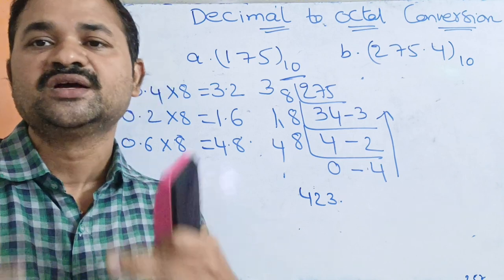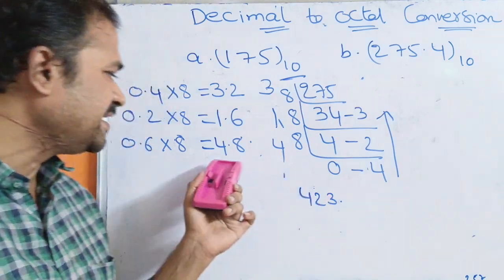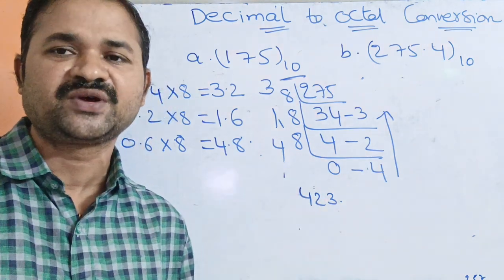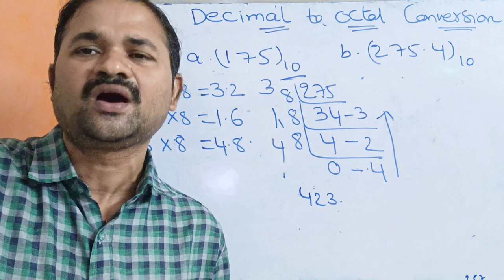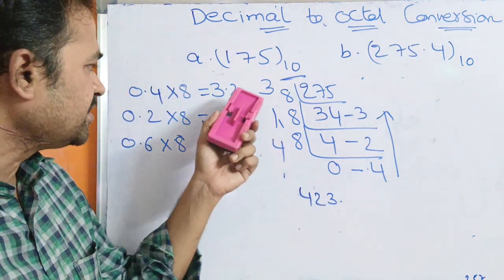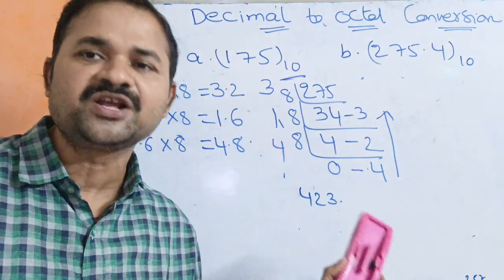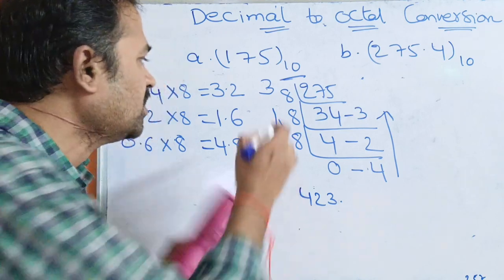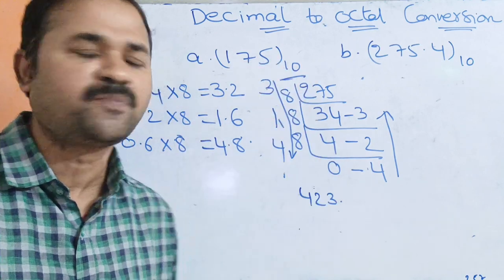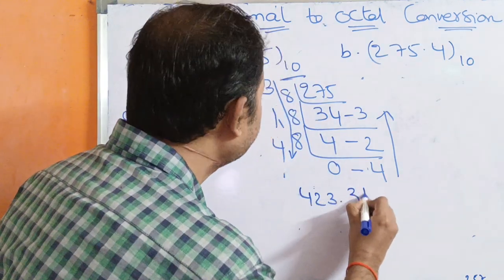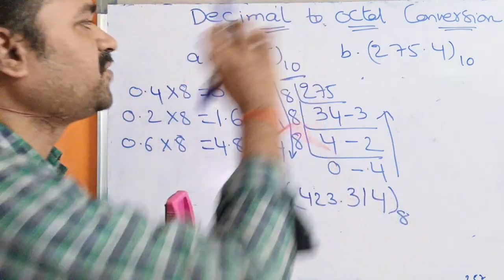Since there is no possibility of reaching exactly 0, we repeat the process until we achieve an accuracy of 3 or 4 decimal points. For the fractional part, we take the digits from top to bottom, so we write 3, then 1, then 4. This gives us 423.314 in octal as the corresponding octal number for this decimal number.